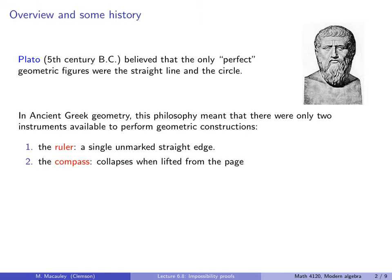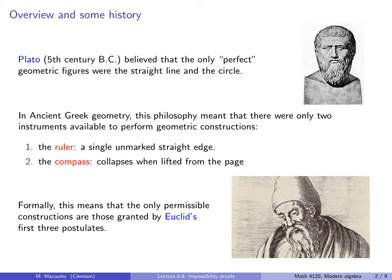In ancient Greek geometry, this philosophy meant that there were only two instruments available to perform geometric constructions. There is the ruler, which is a single, unmarked straight edge, and a compass, which collapses when lifted from the page. Formally, this means that the only permissible constructions are those granted by Euclid's first three postulates.